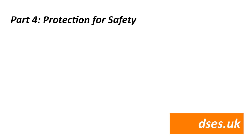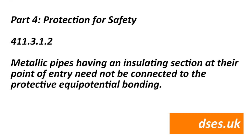There are no changes in Part 3, so we skip to Part 4 — Protection for Safety. There's an exciting change to Regulation 411.3.1.2: metallic pipes having an insulating section at their point of entry need not be connected to the protective equipotential bonding. At last — good riddance to water bonding, at least on those installations where the incoming service is plastic.